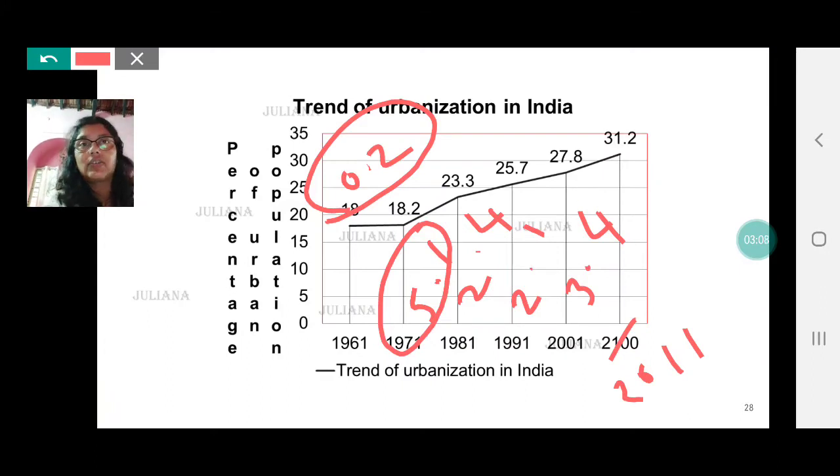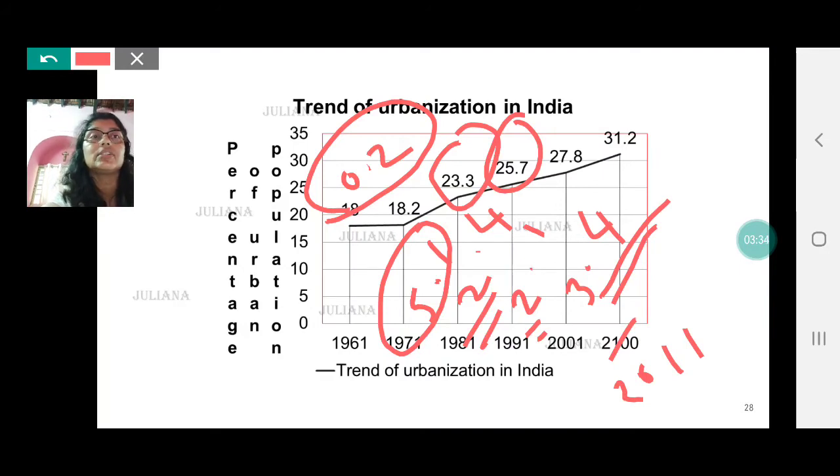Then the growth rate decreased to 2.4 percent though the urban population did not decrease. Urban population has kept on increasing. The rate at which the urban population was growing reduced to 2.4 percent then it reduced to 2.1 percent and between 2001 to 2011 again the growth rate of urban population increased to 3.4 percent. In which decade was the urban population the most? Urban population was most in the year 2011 but the growth in urban population was the highest between 1971 and 1981 and that was 5.1 percent.